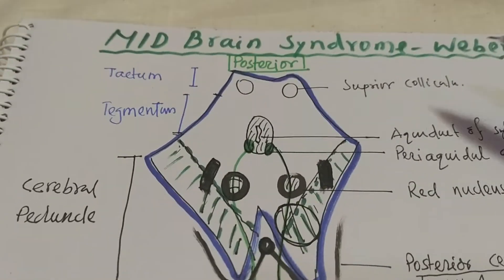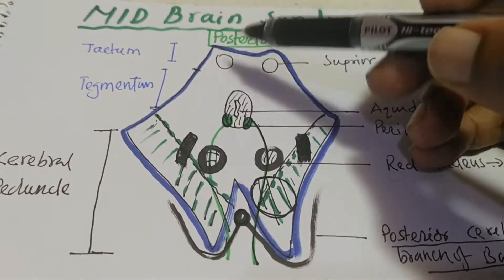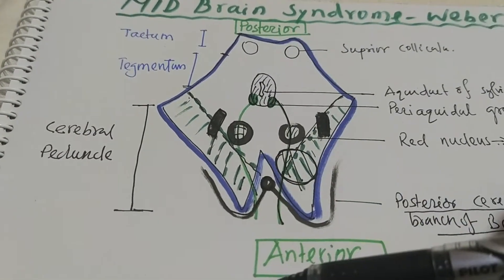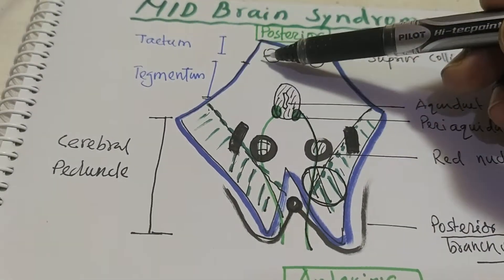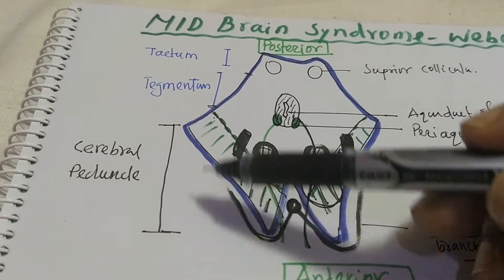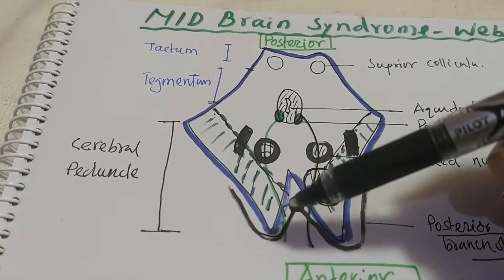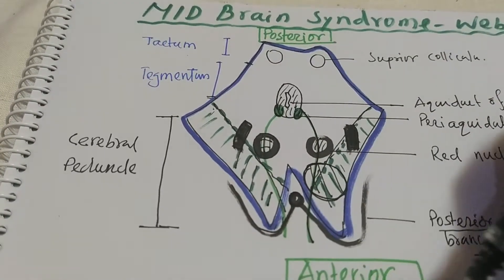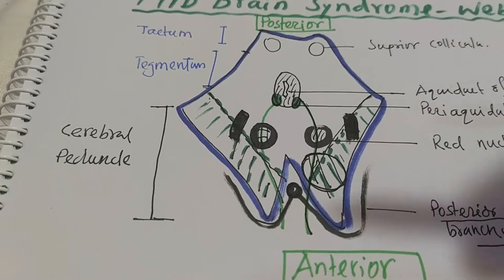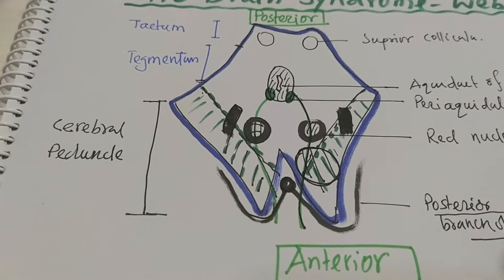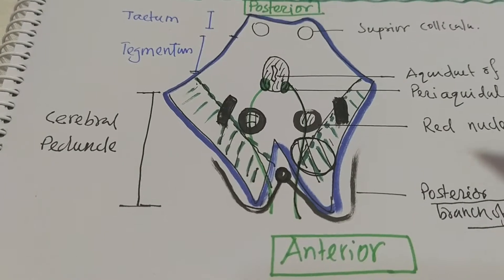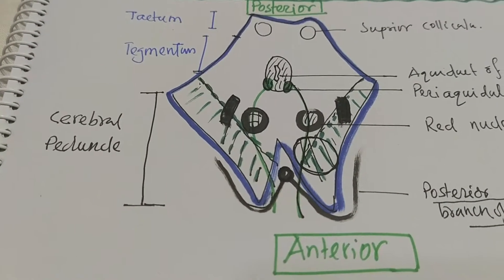The midbrain can be divided into three parts from posterior to anterior: the tectum, the tegmentum, and the cerebral peduncle. The cerebral peduncle is a very important part — through it the corticospinal tract and corticobulbar tract go down, and at a certain level these long tracts cross to the opposite side.